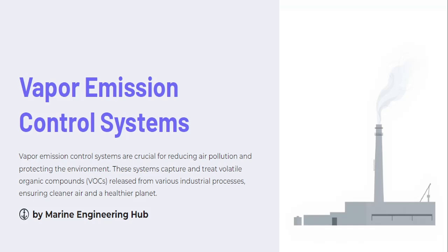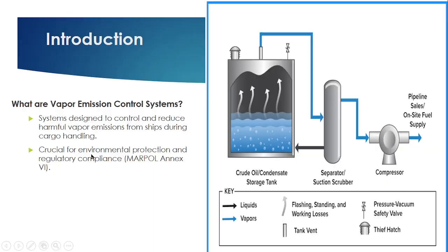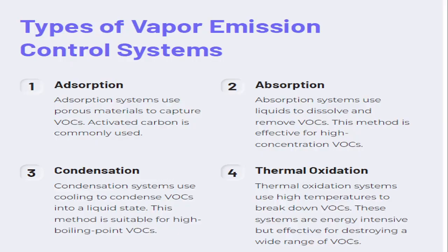So what do you mean by vapor emission control system? It is a system designed to reduce the vapor emissions generated from a ship during cargo handling. Cargo handling means during loading, discharging, and internal transfer, volatile organic compounds (VOCs) are generated that need to be discharged in a way that does not cause harm to the environment. Because of this, the VOC regulation and vapor emission control system came into existence.